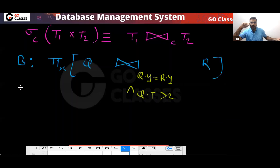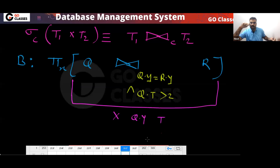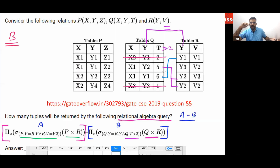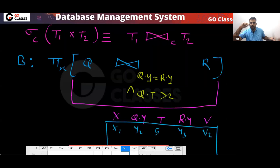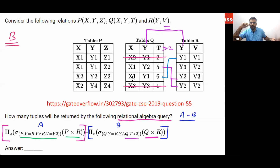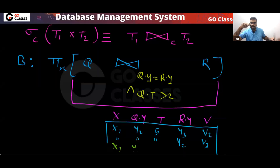Ultimately three tuples you are going to get in query B. You will get the combined attributes X, Y, Q.T, R.Y, and V. The three tuples are: (X1, Y2, 5) with (Y3, V2) and (Y2, V3), and one more tuple (X1, Y1, 6) with (Y1, V1). But in the GATE exam, you don't need to write all the tuples — you are only interested in finding the value of X.